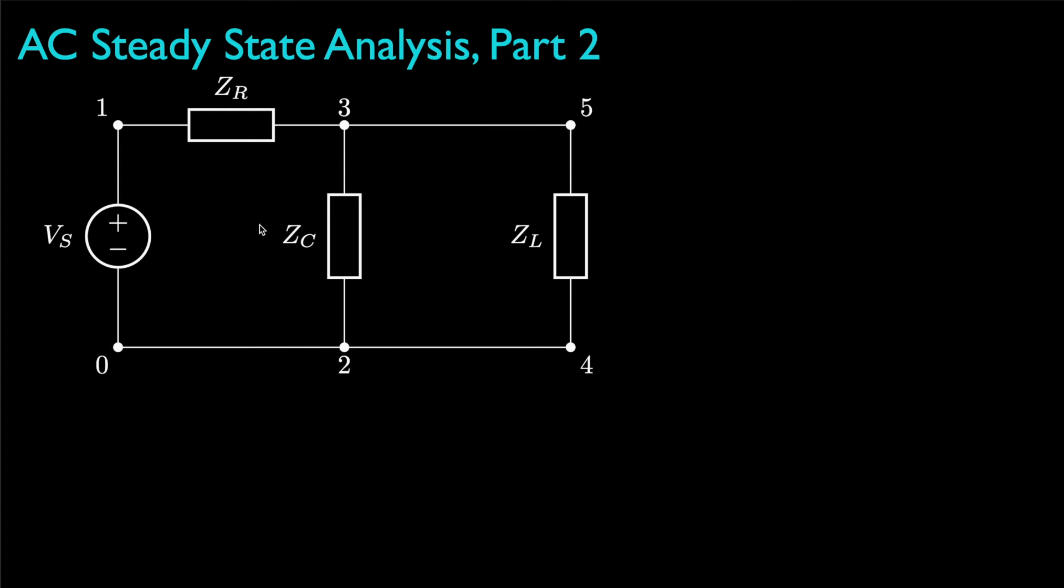We might, for example, use the mesh current method, with I1 being the mesh current on the left, I2 being the mesh current on the right.